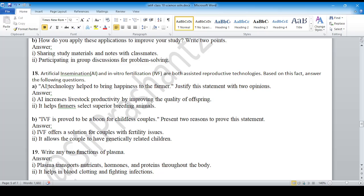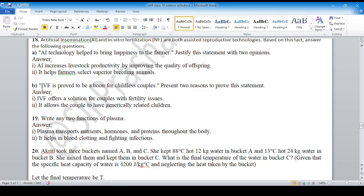The question asks about artificial insemination, not artificial intelligence. Don't get confused. The question mentions in vitro fertilization and asks how to bring happiness to farmers. This is artificial insemination. The problem with breeding: AI increases livestock productivity by improving the quality of offspring. It helps farmers select superior breeding animals. Don't get confused AI with artificial intelligence. If students are excited about AI in a technology context, that's artificial intelligence. You must read the full question carefully.